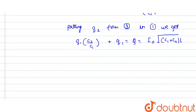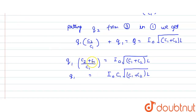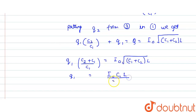Taking Q1 as common, we get Q1 times (C2 plus C1) divided by C1 equals I₀ times √((C1+C2)·L). Solving for Q1: Q1 equals I₀ times C1 times √((C1+C2)·L) divided by (C1 plus C2). Since there is a (C1+C2) factor in the numerator under the square root and one in the denominator, one power cancels, leaving a half power. So Q1 equals I₀ times √(C1·L / (C1+C2)).